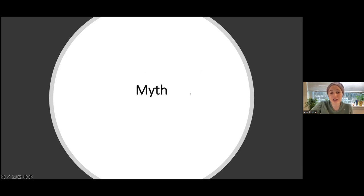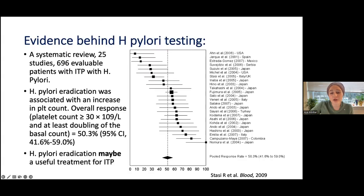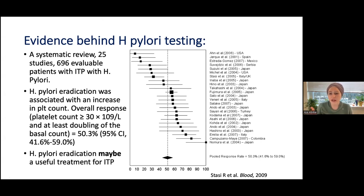This is actually a myth. It's part of the recommendation that you test people for H. pylori, but not everyone needs to be tested. The current ASH guideline recommendation is to test people within a regional or geographic region known to have a high prevalence of H. pylori — it's not a universal test for everyone.